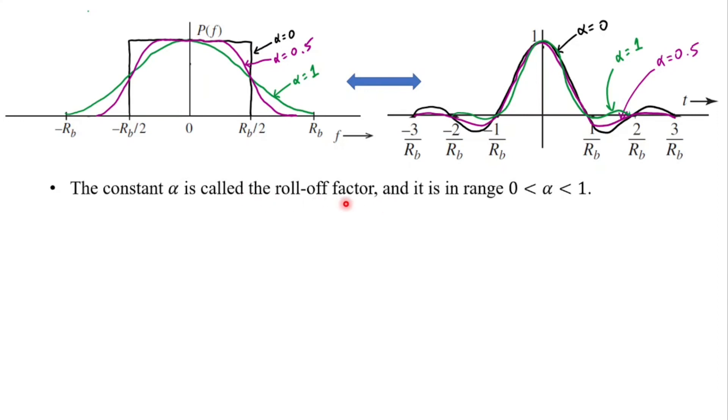Hence the constant alpha used herein is simply called the roll-off factor and it is having a range of 0 to 1. So basically it is the trade-off factor between bandwidth and the strength of tail in the time plot.